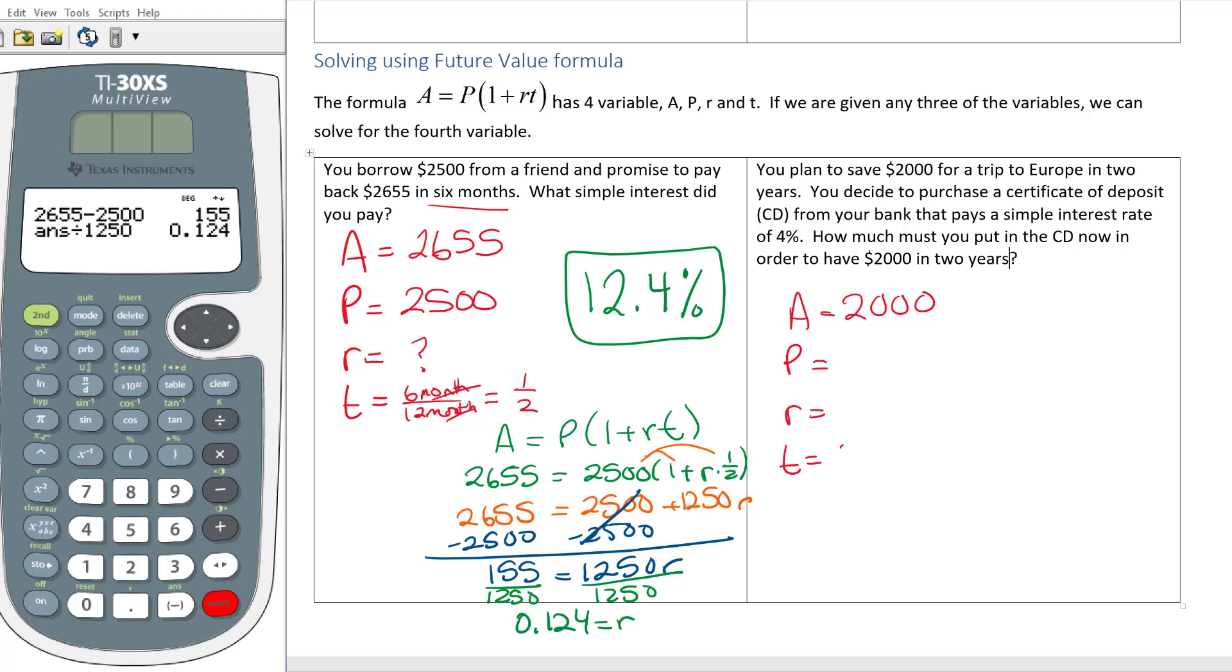In two years, so your T is 2. And it's already in years, so you don't have to translate that into years. You decide to purchase a CD from your bank that pays simple interest, so that's going to use the formula that we've been using at a rate of 4%. That's my rate 0.04. How much must you put into the CD now? That's P. I don't know how much I'm going to need right now, so I'm going to put a question mark there.